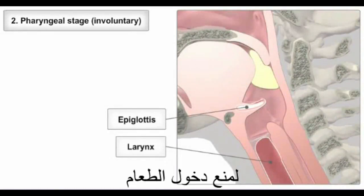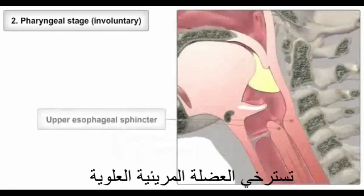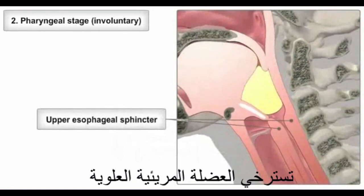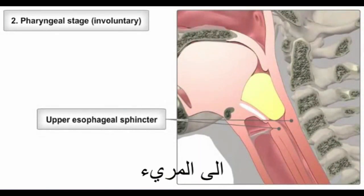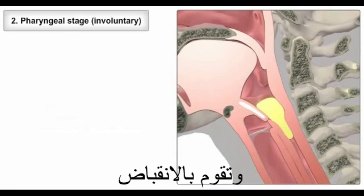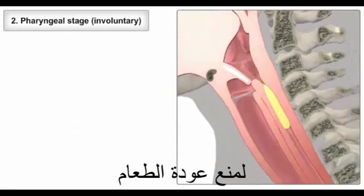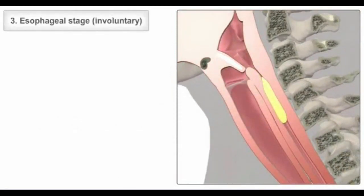This prevents the bolus from entering the respiratory tract. The upper esophageal sphincter relaxes to allow the bolus to move into the esophagus, and contracts to reduce backflow into the pharynx.